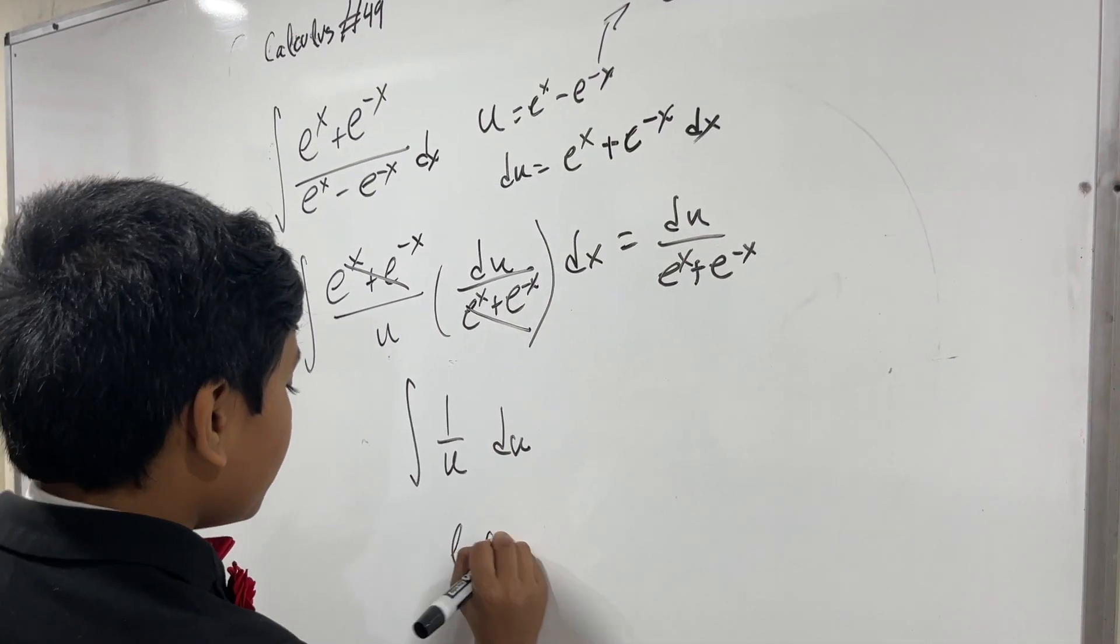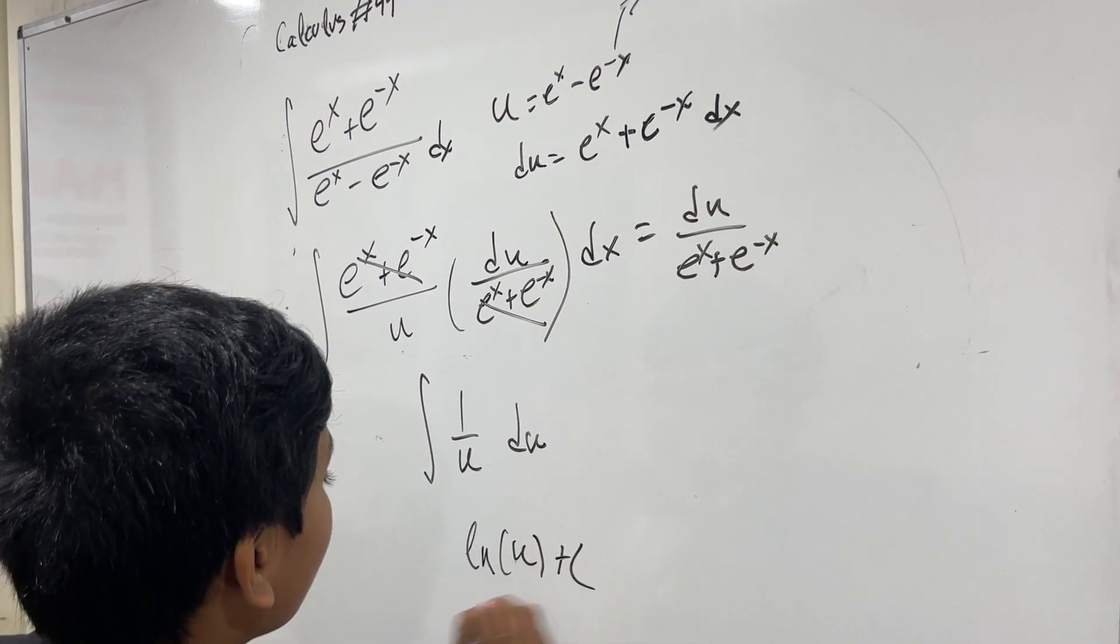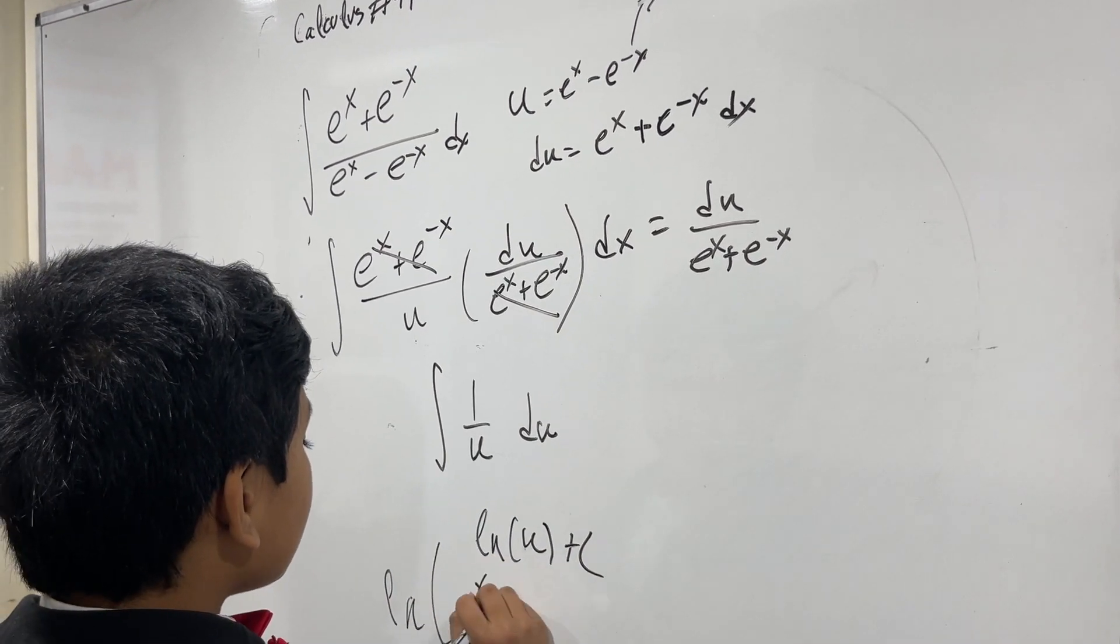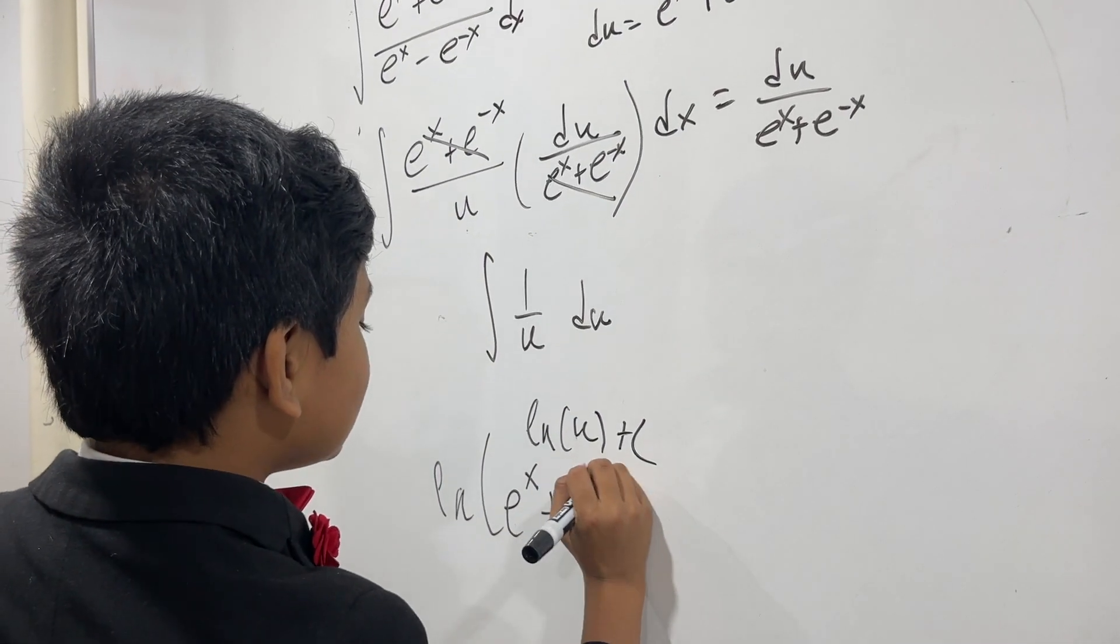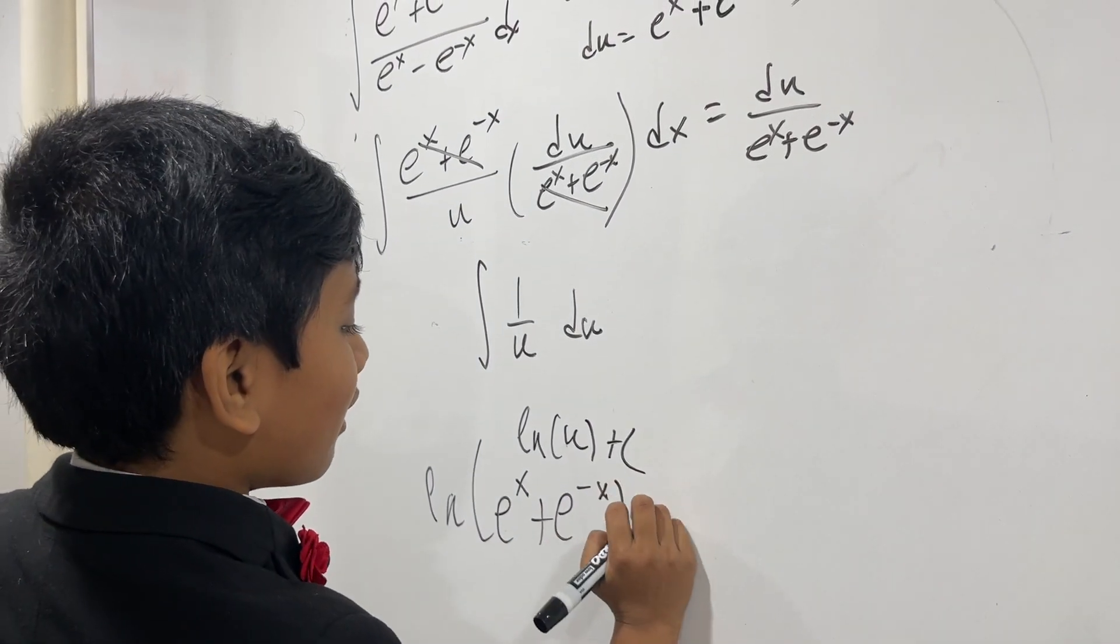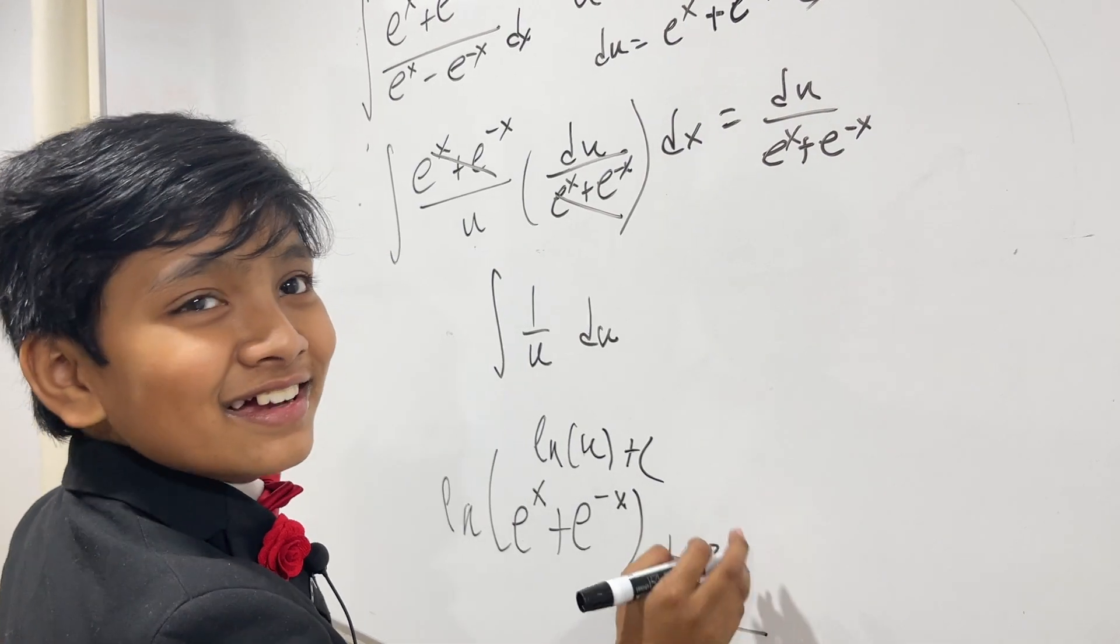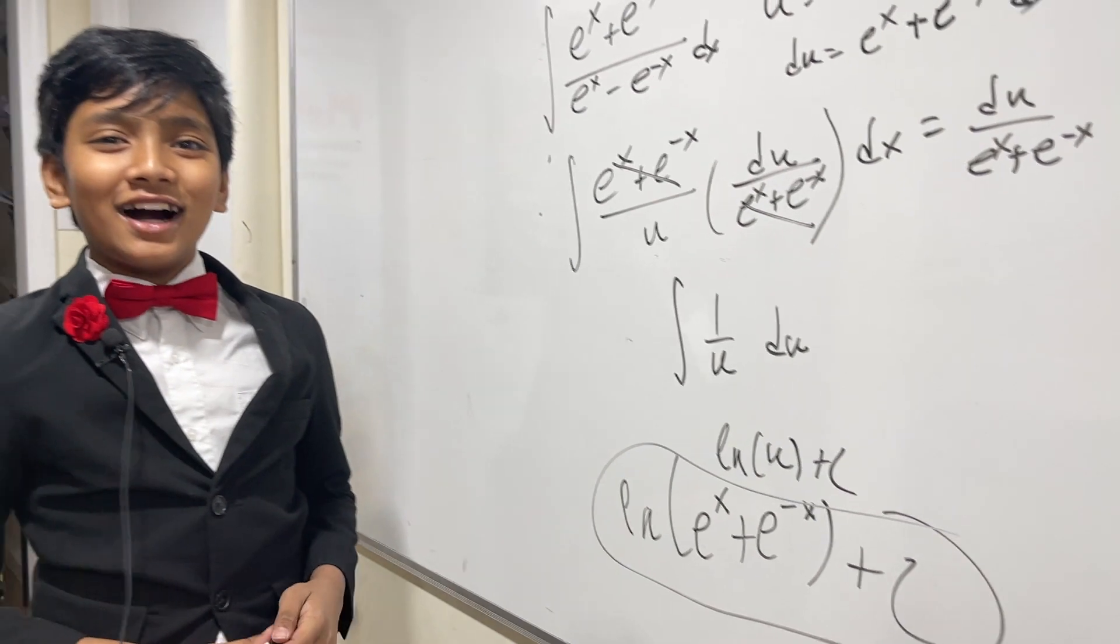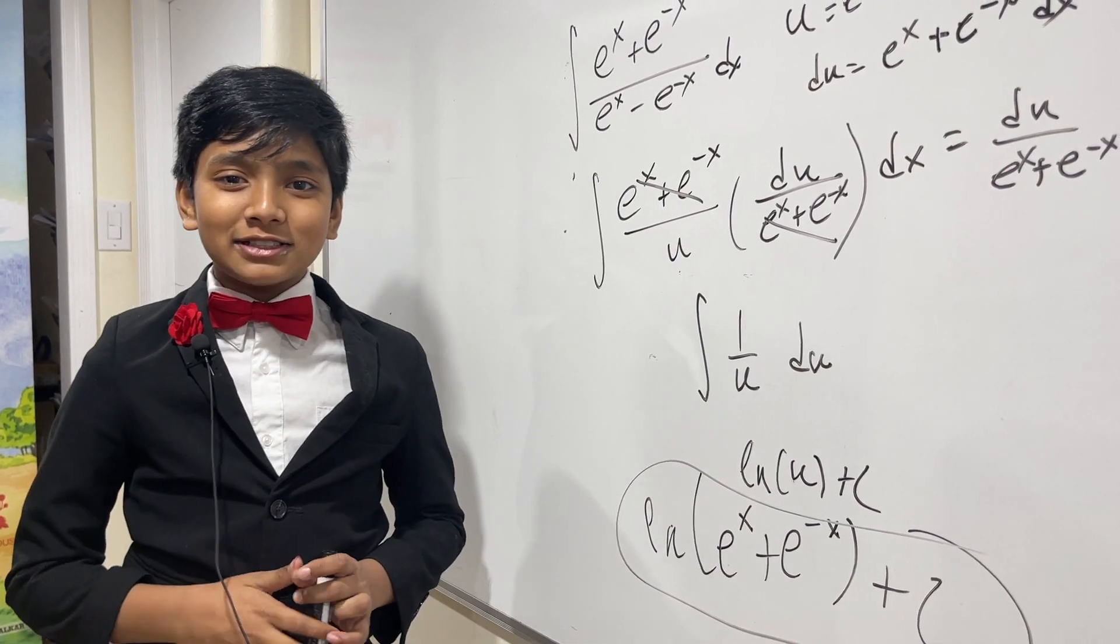So this is just ln of u, but that's ln of e to the x plus e to the minus... dad's brain... plus C. What did I do? What did I do this time? How can you be racist to someone of the same race?